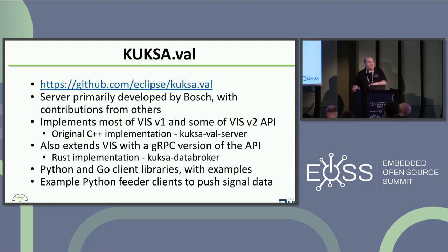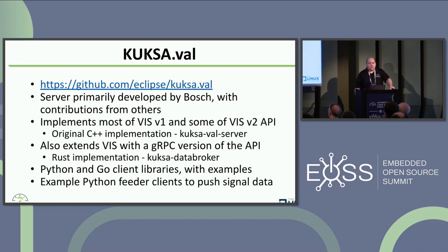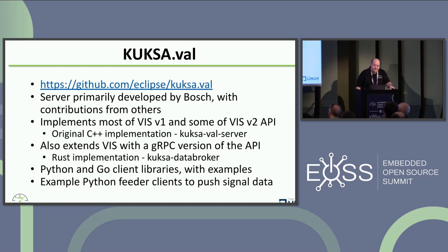These are specs, so we need an implementation. AGL is a code-first project. Bosch, for the most part, started a project called Kuksa.val, which is now under the auspices of Eclipse. It's mostly Bosch developers, but there are contributions from other folks, and it's up on GitHub so anyone can contribute. Originally it implemented the VIS spec B1 and some of B2 in a C++ server using Boost. Then the Bosch folks developed an alternate implementation called the Kuksa Data Broker, written in Rust, which is becoming their focus. They're going to deprecate the C++ server. There are also convenient Python and Go client libraries, and Python feeders that push data into the Kuksa server.